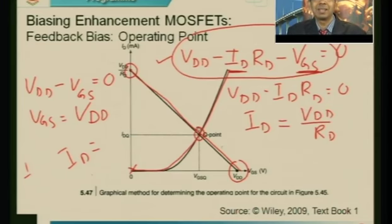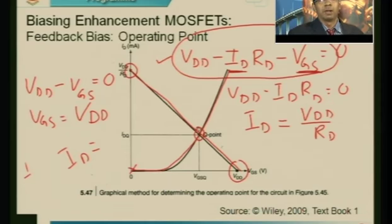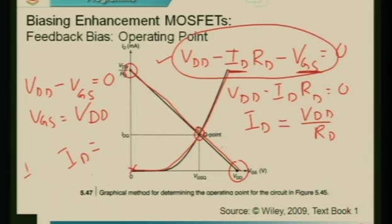The procedure is: use Kirchhoff's voltage law, write the equations, draw the DC load line, superimpose it on the transfer characteristics, and wherever they intersect is the Q point. Once VGS is found, VDS can be found by writing one more KVL for the output loop. This is best understood through a solved example with a step-by-step process.